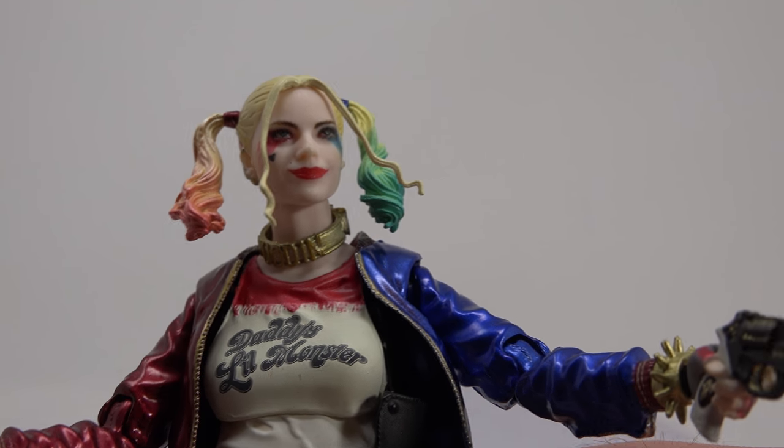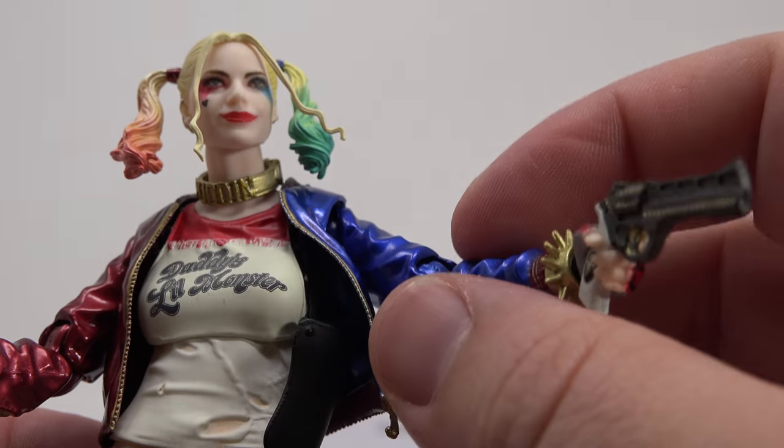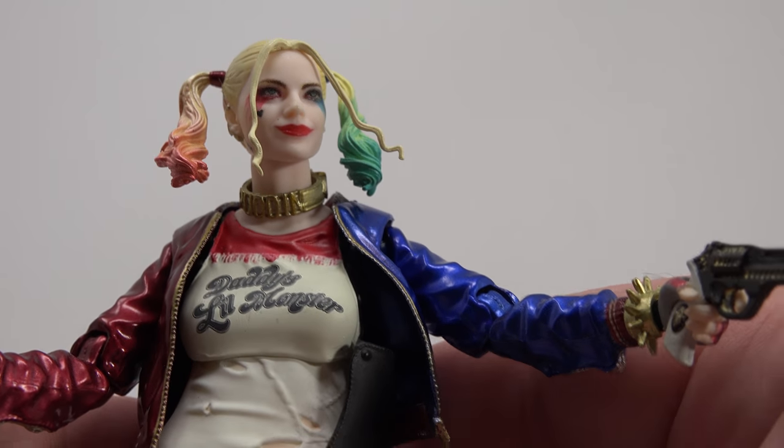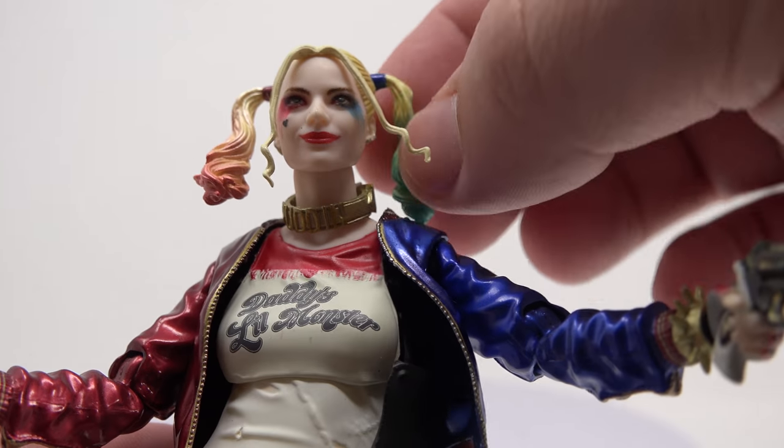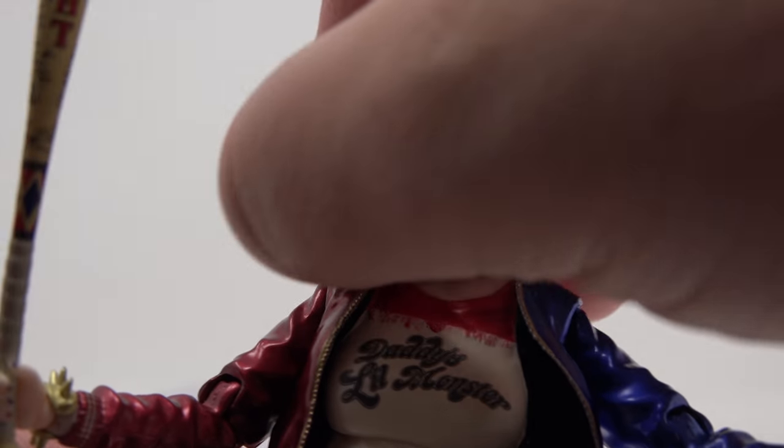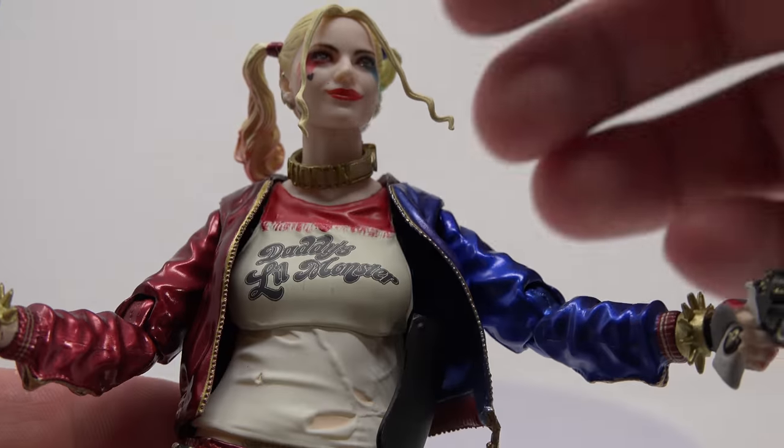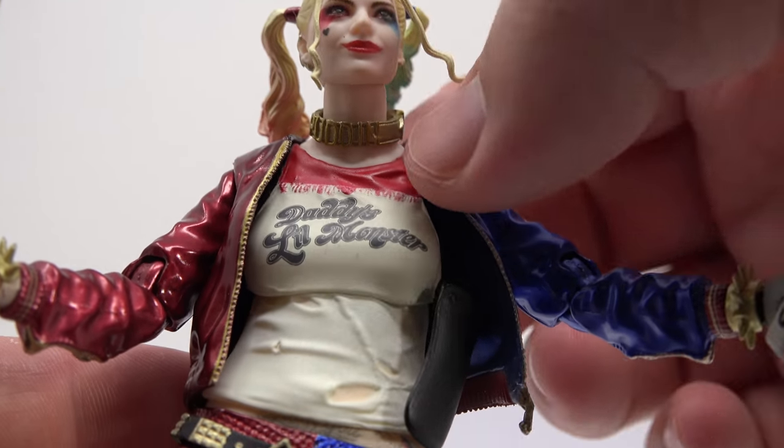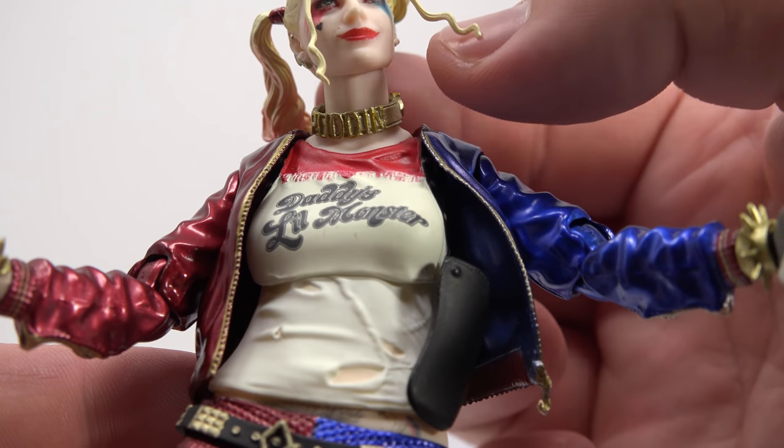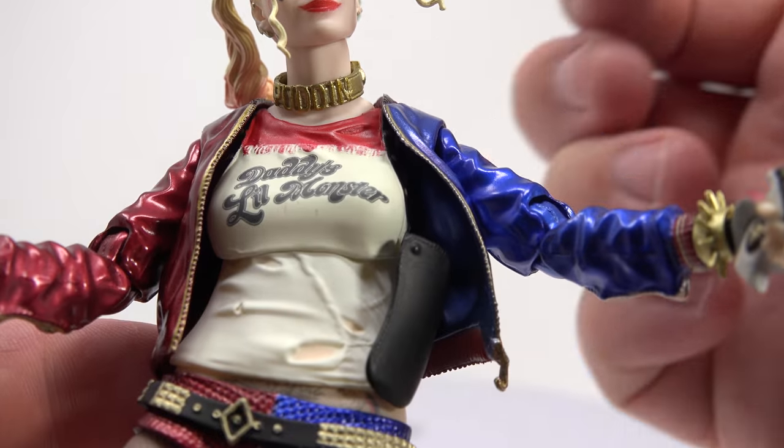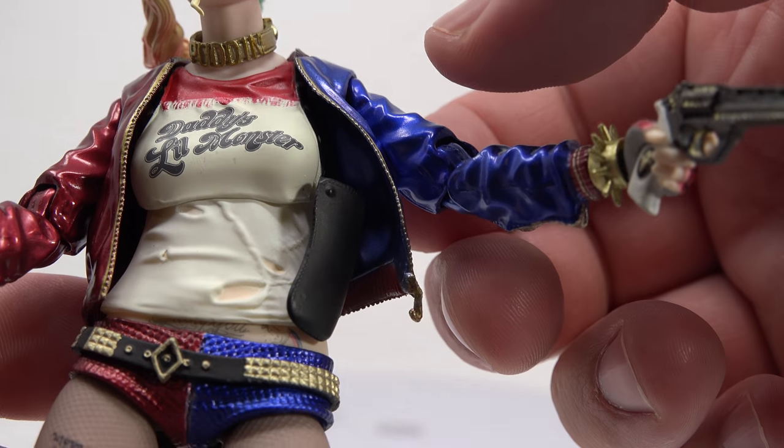It's a little bit noticeable, but not crazy. And again, on this head sculpt, you have the articulated ponytails, which I really like. So you can make it look like she's flipping around and stuff. Her little pudding choker here is movable, which I like.